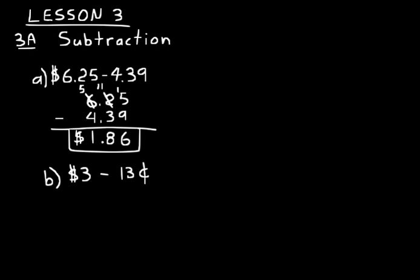Now try another one: $3 minus 13 cents. You've got cents, so you need to change that to a dollar format with decimal points. Your minuend would be $3.00, written first. The subtrahend would be 13 cents, written as 0.13 — 0 dollars and 13 cents.